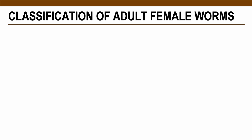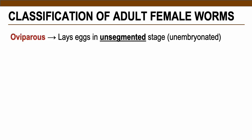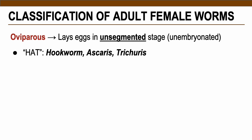Adult female worms are classified based on their capability to produce eggs. Oviparous females lay their eggs unsegmented or unembryonated — the eggs must develop further outside the host, usually in moist soil. Examples are hookworm, Ascaris, and Trichuris — all soil-transmitted helminths, released by the female worm underdeveloped.